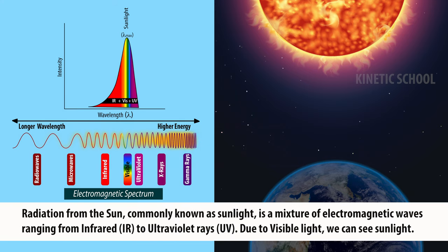Radiation from the sun, commonly known as sunlight, is a mixture of electromagnetic waves, ranging from infrared to ultraviolet rays. Due to visible light, we can see sunlight.